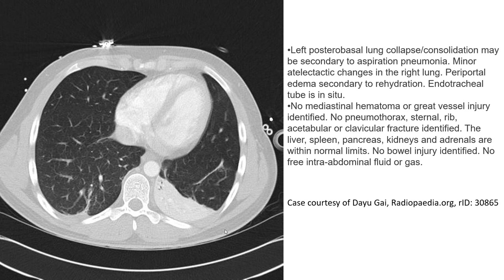This CT shows left posterior lung collapse and consolidation, possibly secondary to aspiration pneumonia. There is also minor atelectasis in the right lung with peribronchovascular edema secondary to rehydration. An endotracheal tube is in situ.